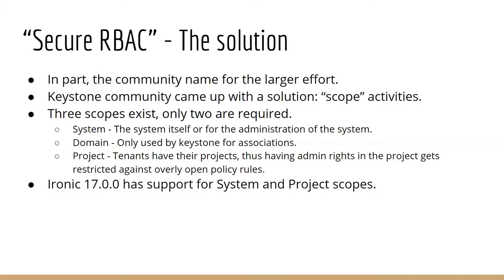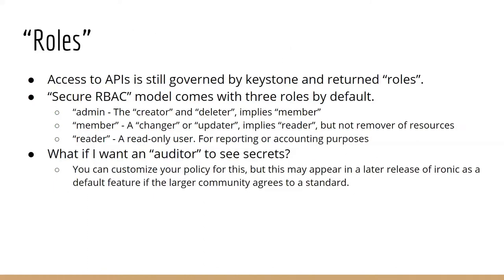The latest release of Ironic has support for system and project scopes. This has been a lot of work — I want to thank everyone who reviewed the code. In the Keystone model, roles are a little different from what we had. The secure RBAC model has admin, member, and reader. Admin can create and delete items globally; members have certain abilities to change and update; and everyone can read because admin cascades to member, and member cascades to reader.